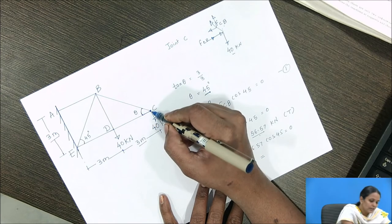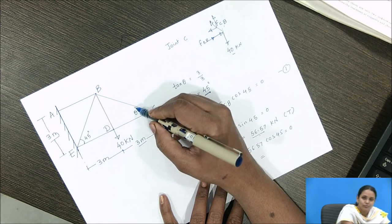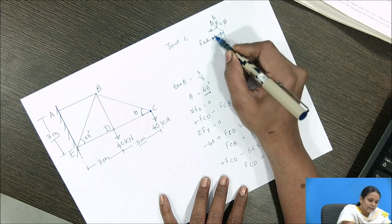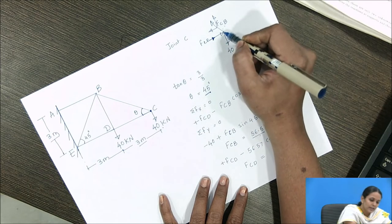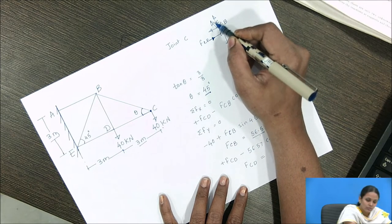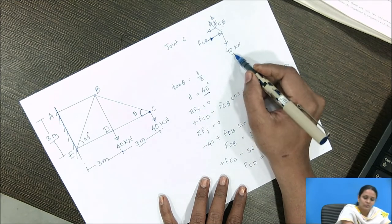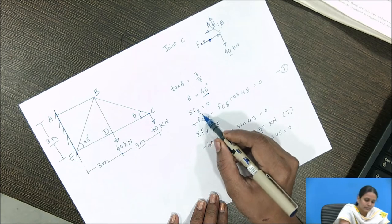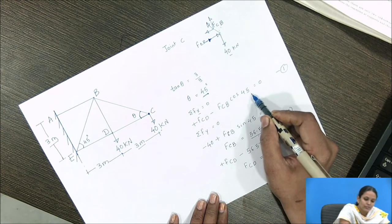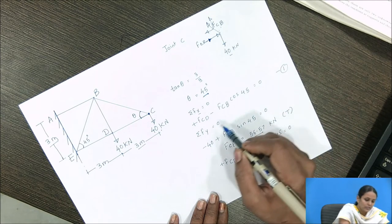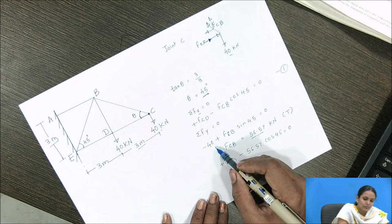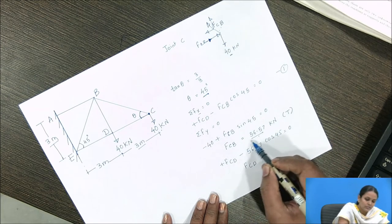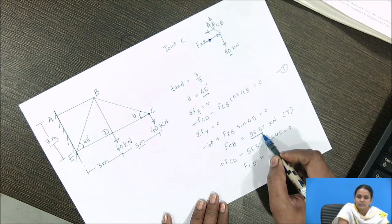At joint C, we have one known force and two unknown forces. I have drawn the free body diagram of joint C, showing the direction of force CD as compression and force CB as tensile. Applying equilibrium equations: for summation F of x, force in CD minus force in CB cos 45 = 0 (equation 1). For summation F of y, minus 40 plus force in CB sin 45 = 0, giving force in CB = 56.57 kN.